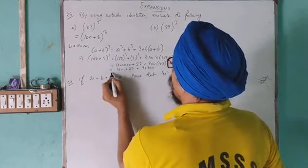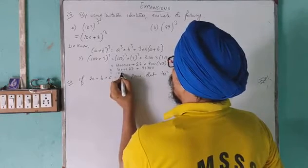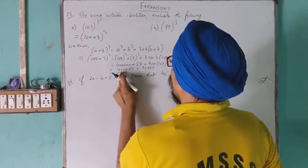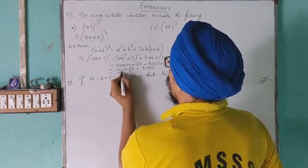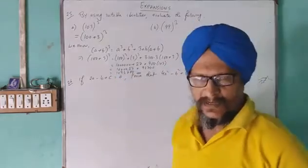So 9, 2, 7 means, it will be kya dekho, 1,092,727. This is our answer.